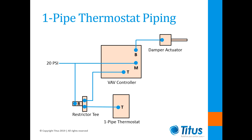A one-pipe thermostat requires the addition of a restrictor tee between the main air line and the thermostat main air port. The purpose of this restrictor tee is to isolate the thermostat and whatever it's controlling from the main air line. By doing this, the restrictor tee limits the air volume available to the thermostat and therefore prevents the thermostat from bleeding off enough pressure to cause the main air pressure to drop. If this isn't done, the thermostat could easily cause the main air pressure to drop below 15 psi, resulting in controls that lack adequate pressure to operate.